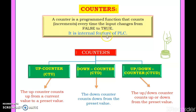In PLC, counters are of three types: up counter, down counter, and up-down counter. Up counter is named CTU, down counter as CTD, and up-down counter as CTUD.